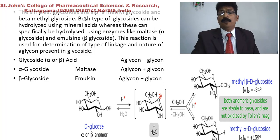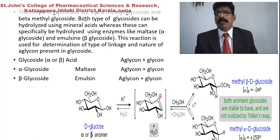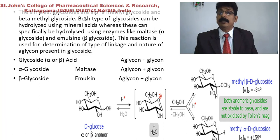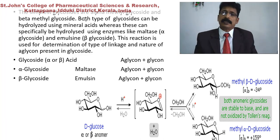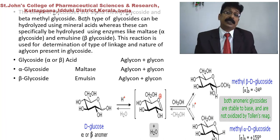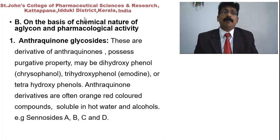A reaction is shown where D-glucose reacts with methanol to give methyl beta-D-glucose and methyl alpha-D-glucose, the simplest glycoside molecules. Here the glucose is the sugar molecule and CH₃ is the aglycon — that is why it is called the simplest glycoside. Instead of CH₃, complex steroidal ring structures or terpenes can be attached as the aglycon, giving rise to specific named secondary metabolites.